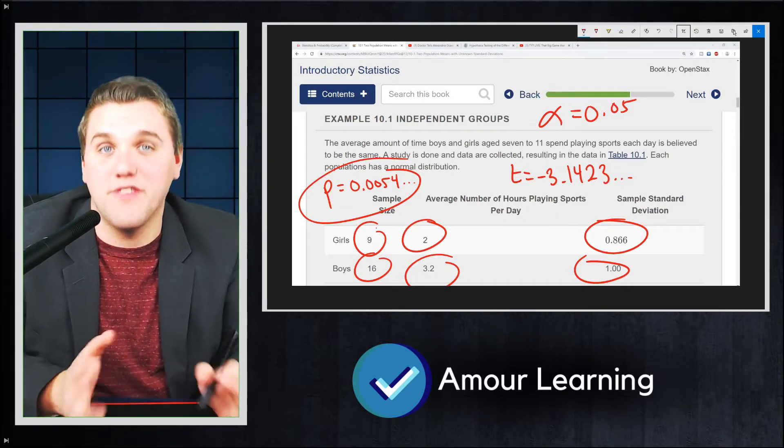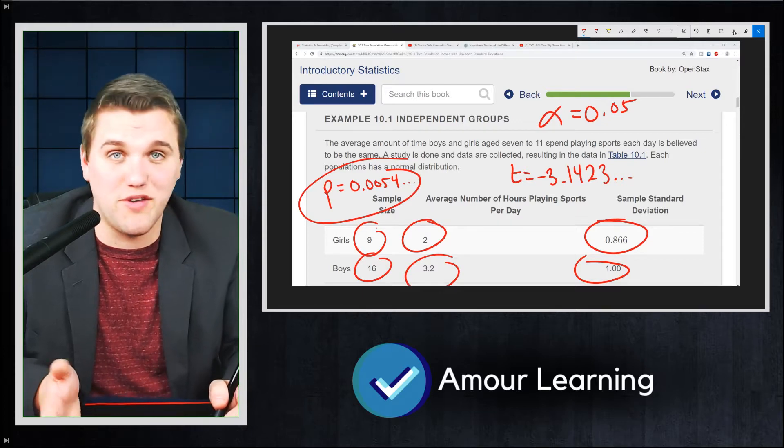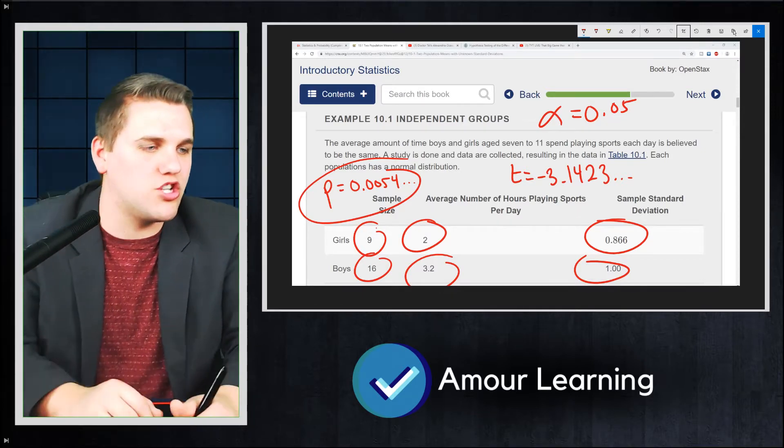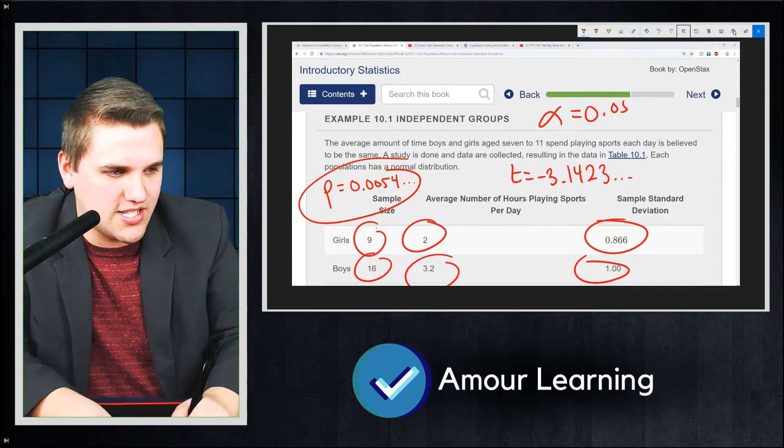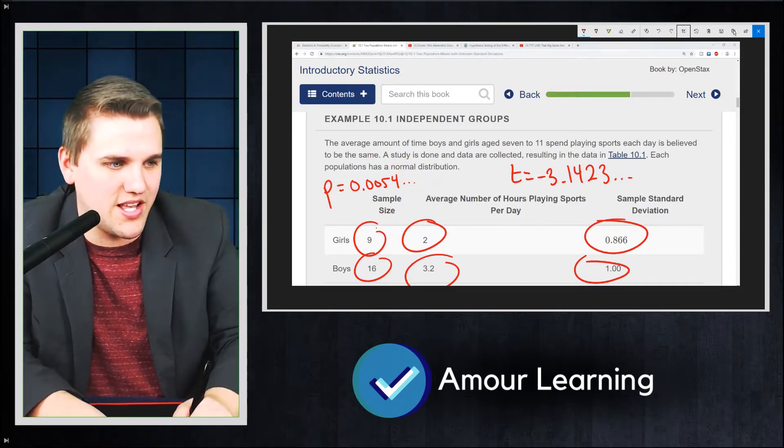This p-value is very, very small relative to 0.05. It's less than 0.05. And so for that reason, we should reject this null hypothesis that we see here.